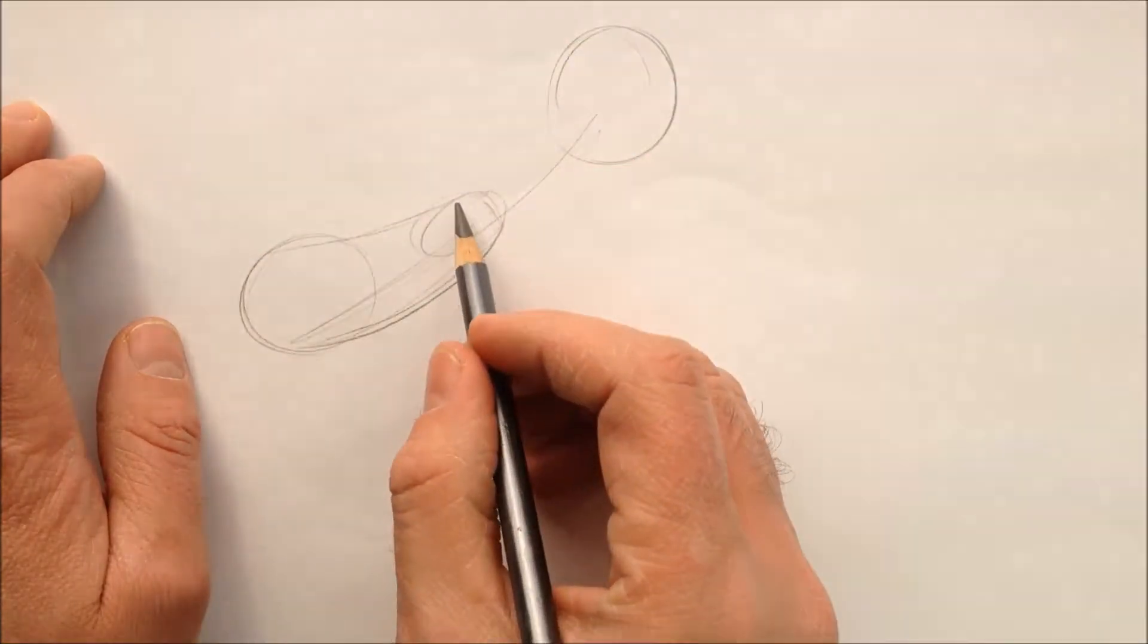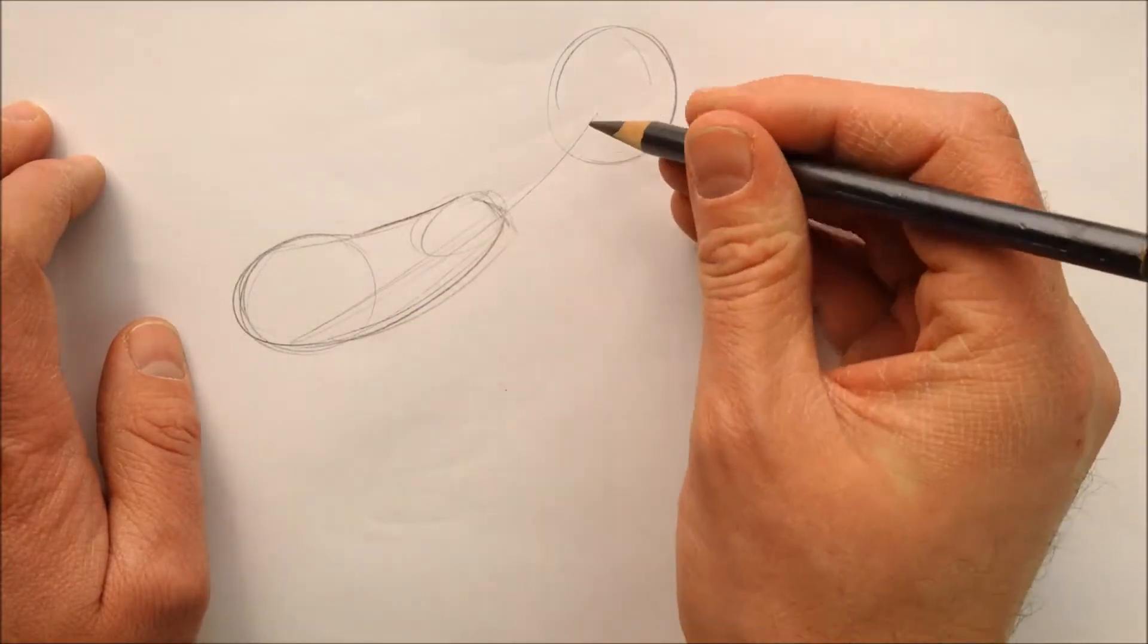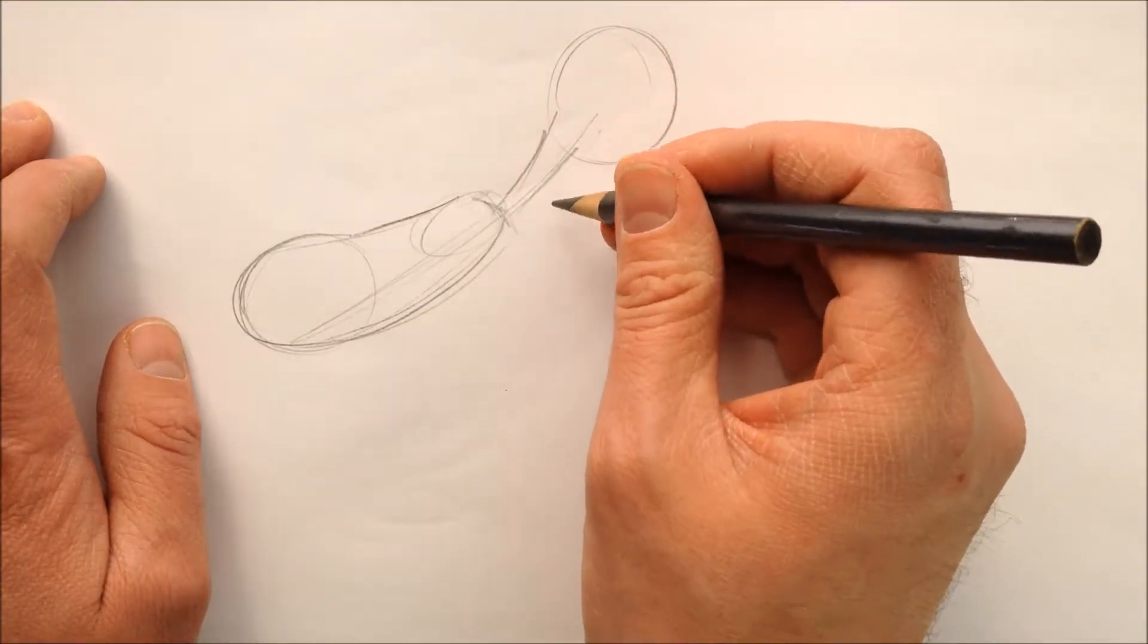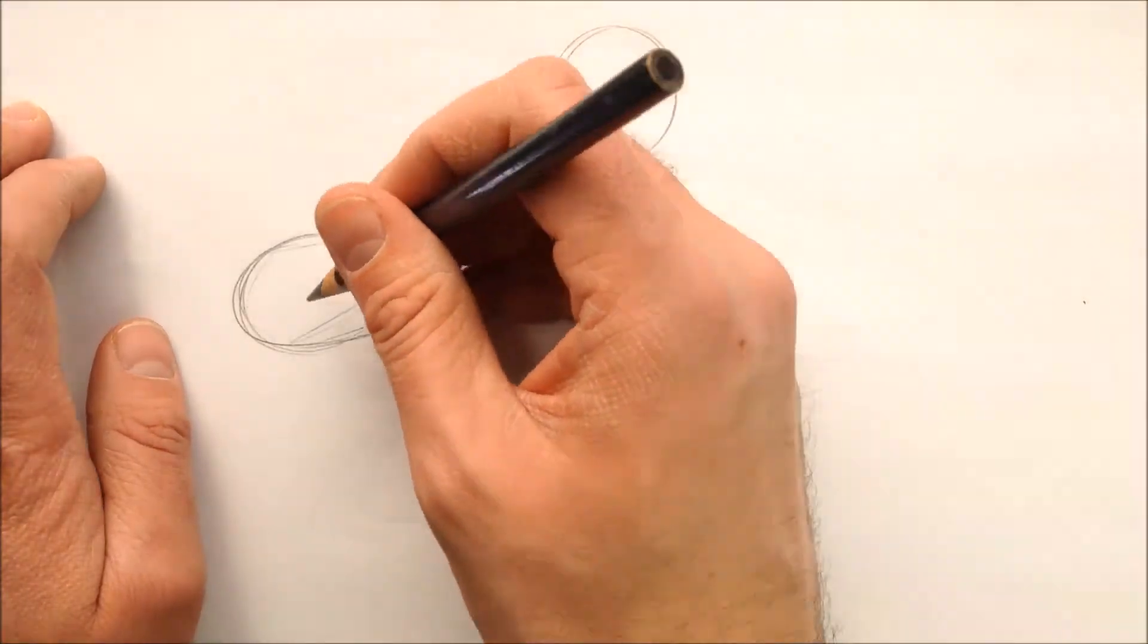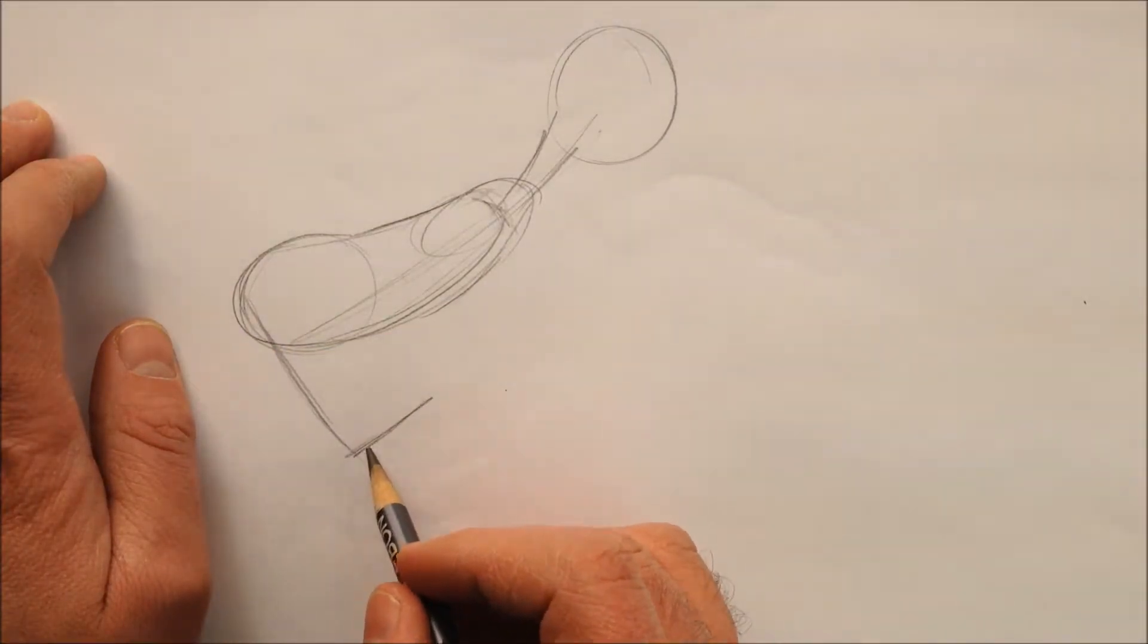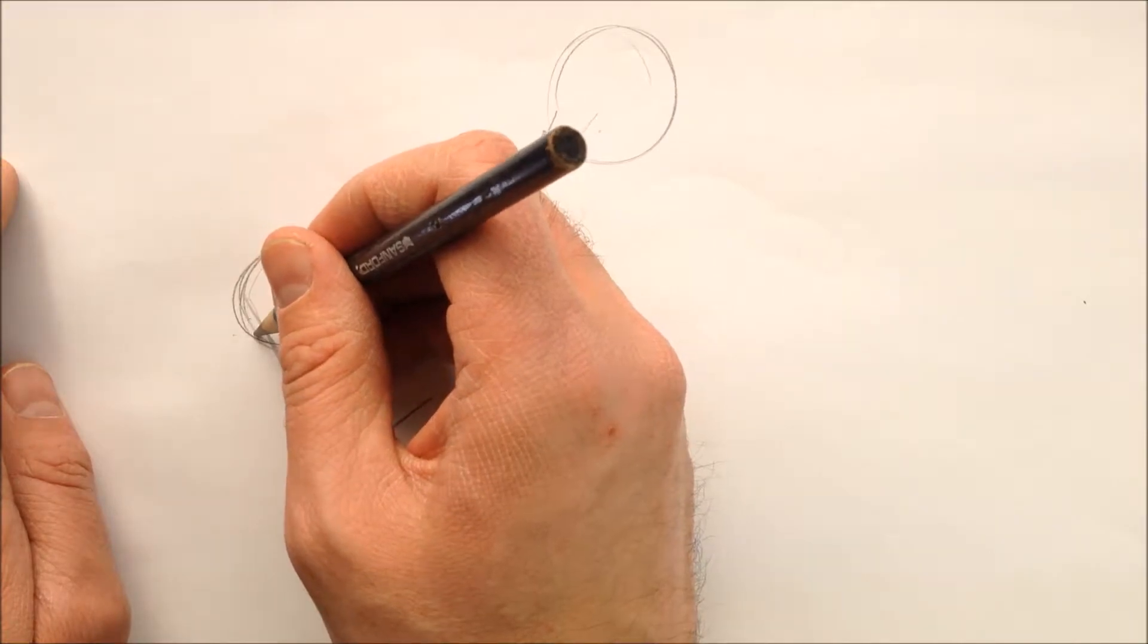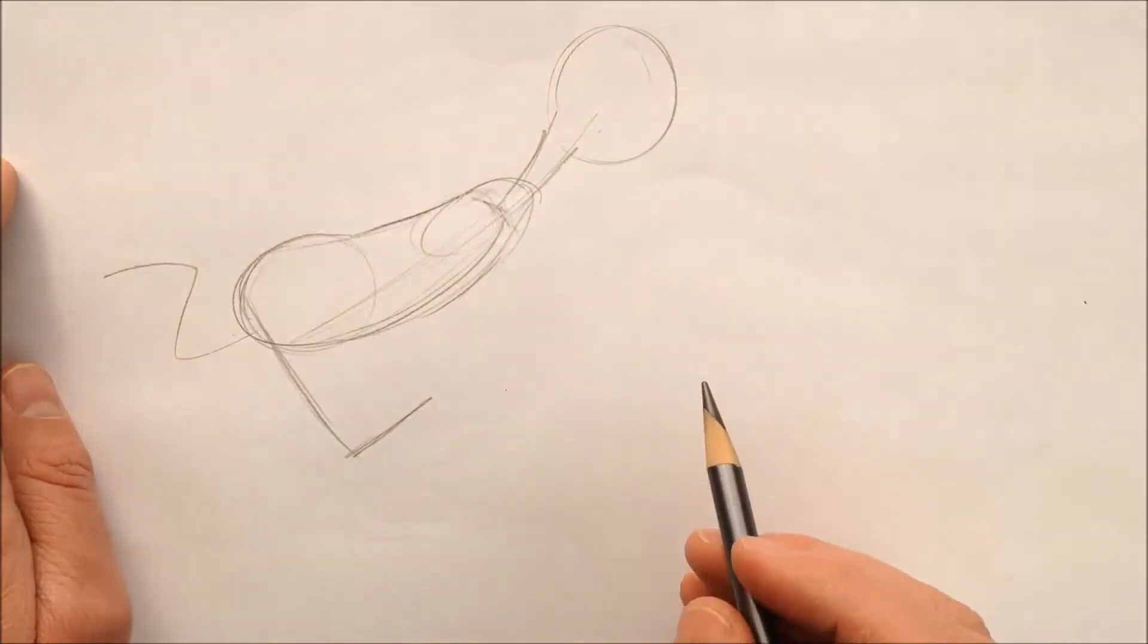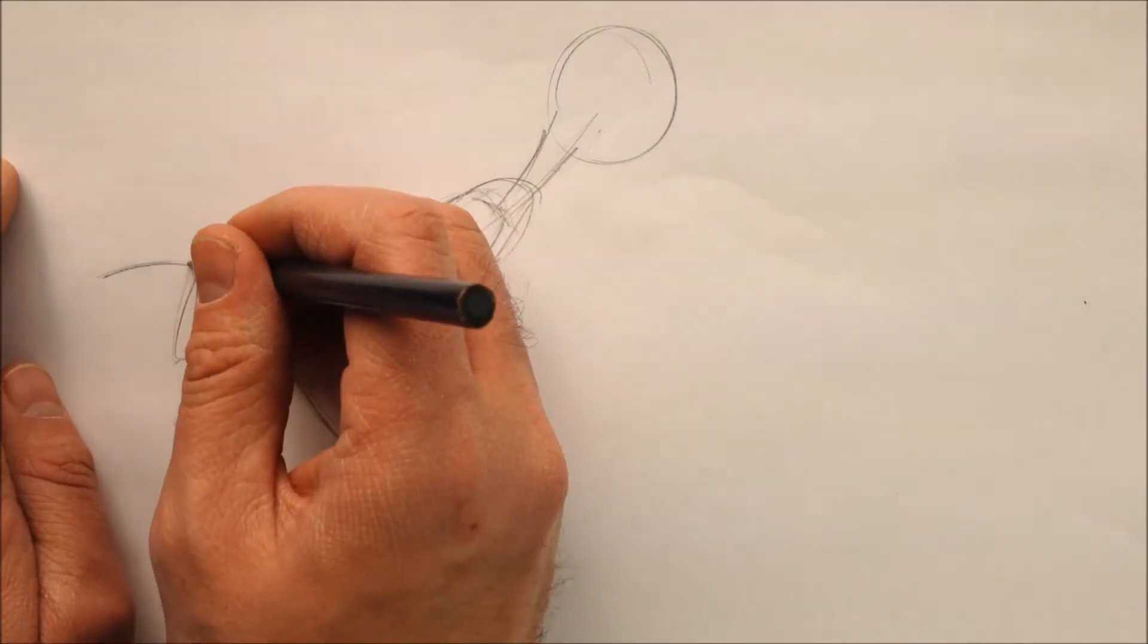So we'll draw his body with that pear shape. We'll put his front leg coming straight down, and then his back leg is going to come down, up and back for his foot.